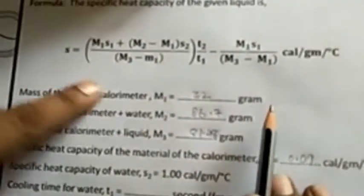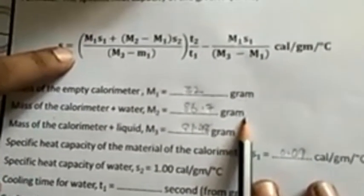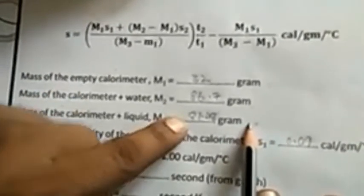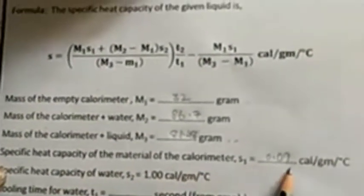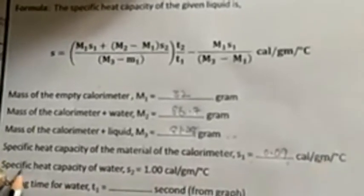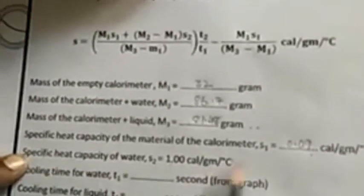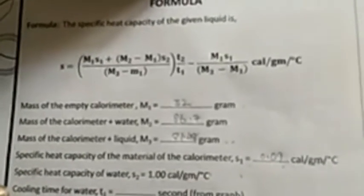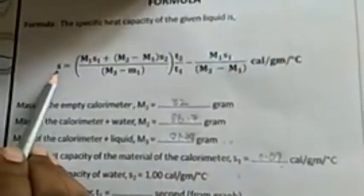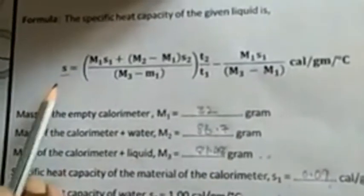We have recorded the mass of the empty calorimeter M1, the mass of the calorimeter plus water — 86.7 grams — and the mass of the calorimeter plus liquid (oil or glycerin) — 81.48 grams. The specific heat capacity of the material of the calorimeter is 0.09 calorie per gram per degree centigrade, and the specific heat of water S2 is 1 calorie per gram per degree centigrade. From the graph, we measure the cooling times T1 for water and T2 for liquid, and substituting all these values in the formula, we calculate the specific heat of the unknown liquid.